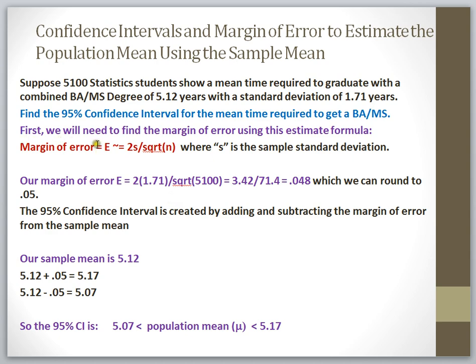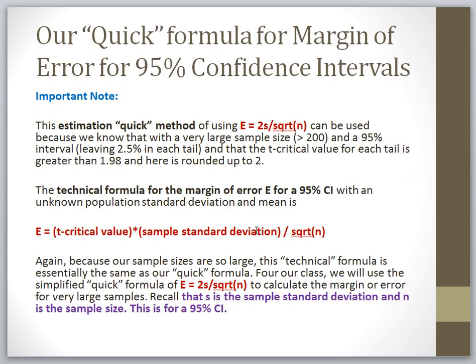Now keep in mind this particular formula that I'm using is specific for a 95% confidence interval about a population mean, and it uses a sample mean and a sample standard deviation. This 2 in front of the sample standard deviation is actually an estimate.